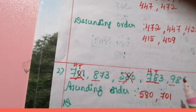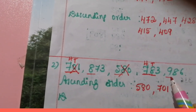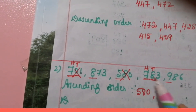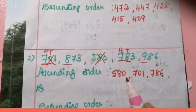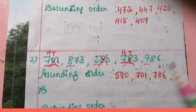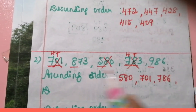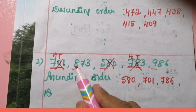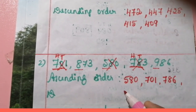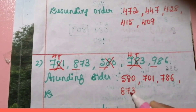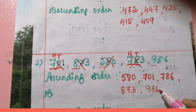Now we will compare the remaining three numbers. The hundreds digits are eight, seven, and nine. Seven is the smallest number, so seven hundred and eighty-six comes next and we cross it out. Of the remaining two numbers, eight and nine in the hundreds place: eight is the smallest, so eight hundred and seventy-three is next. And the last number is nine hundred and eighty-six.